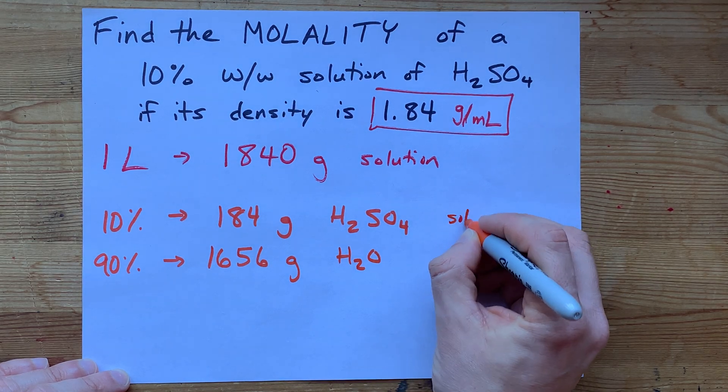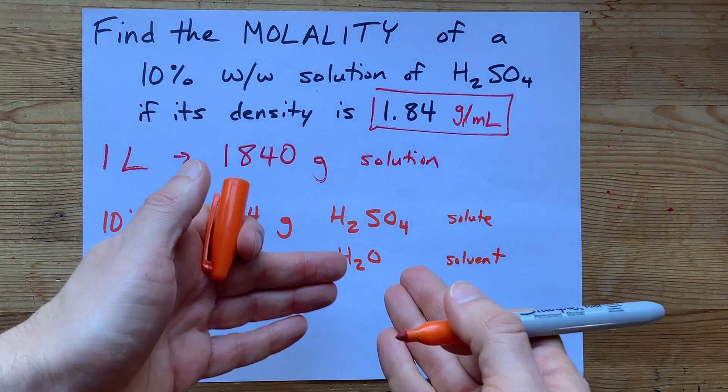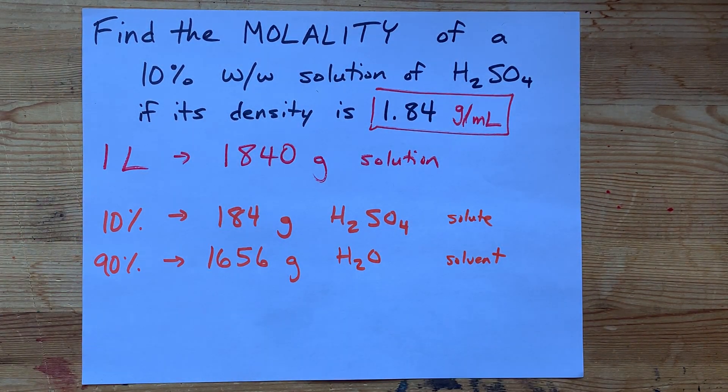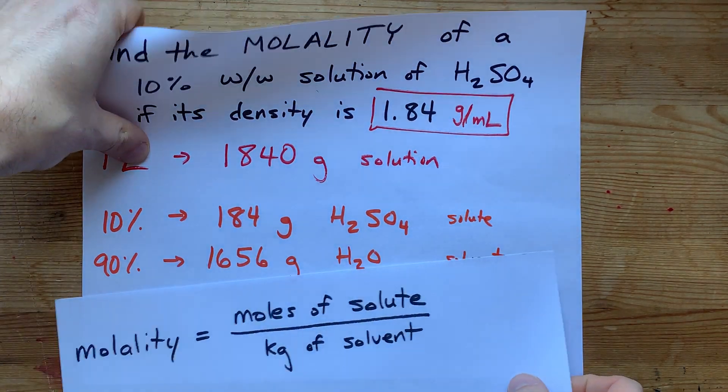Now, one of these is the solute and the other is the solvent. By definition, the one that there is more of is the solvent. So, what we need to do is fill in this formula.